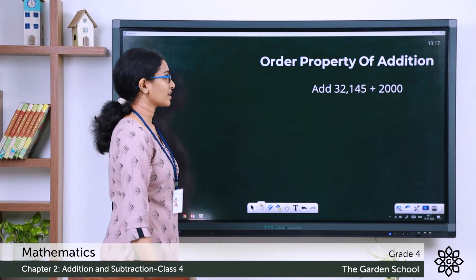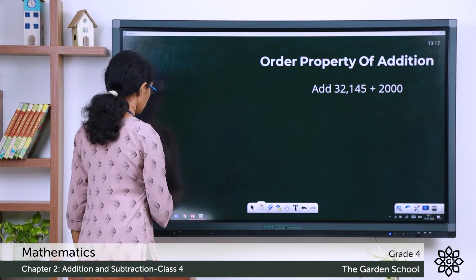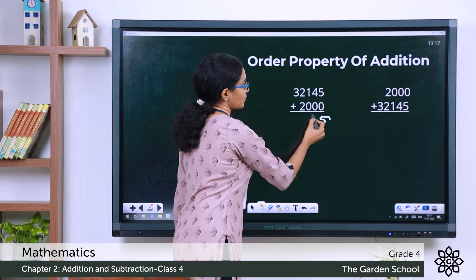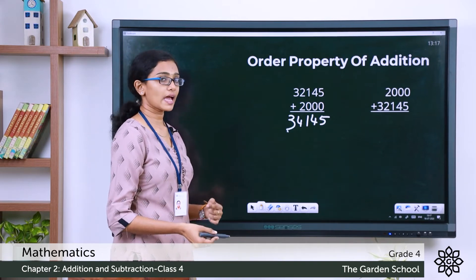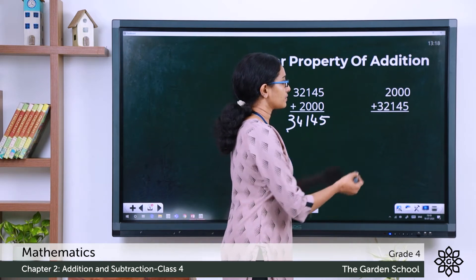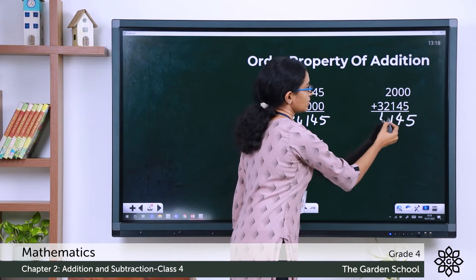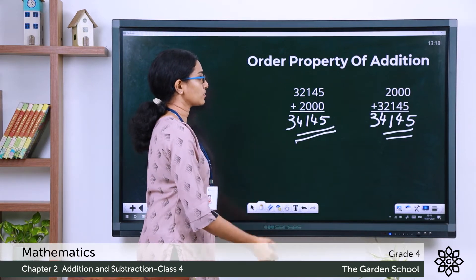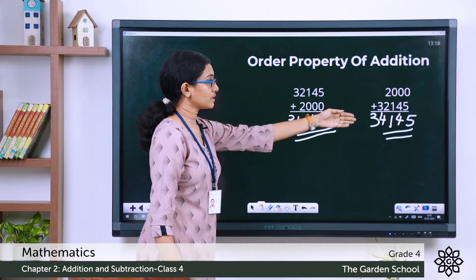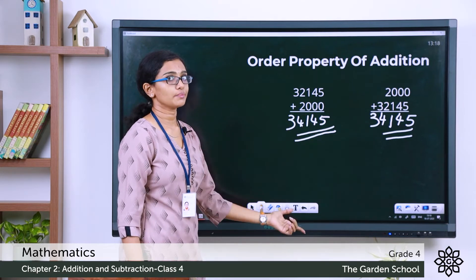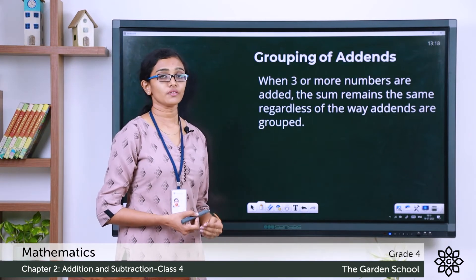Let's see that with an example. Look at this addition: 32,145 plus 2,000. Let's check if the order property is correct. The sum is 34,145. Now let's change the order of the add-ins — 2,000 first and then 32,145. Adding again, the sum is also 34,145. Even when we change the order of the add-ins, the sum remained the same. Hence the order property of addition is verified.